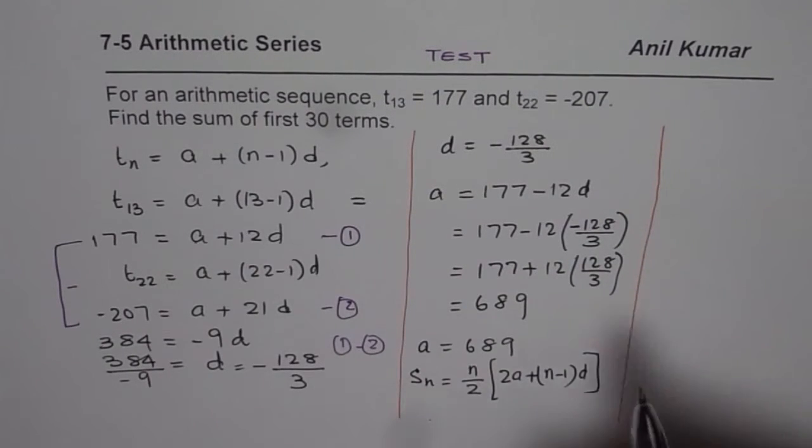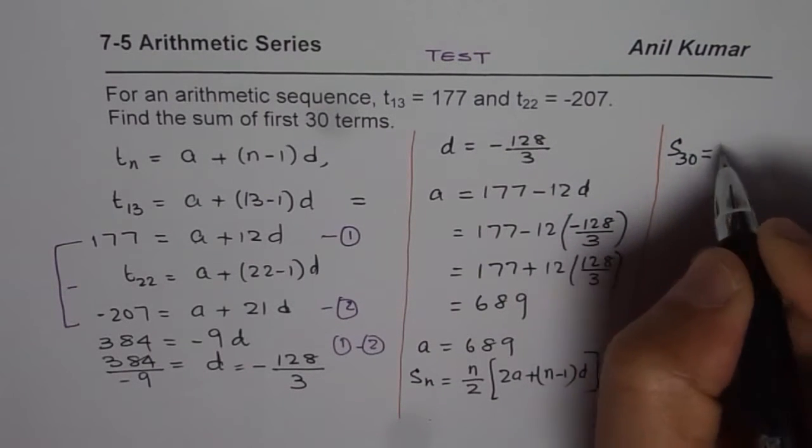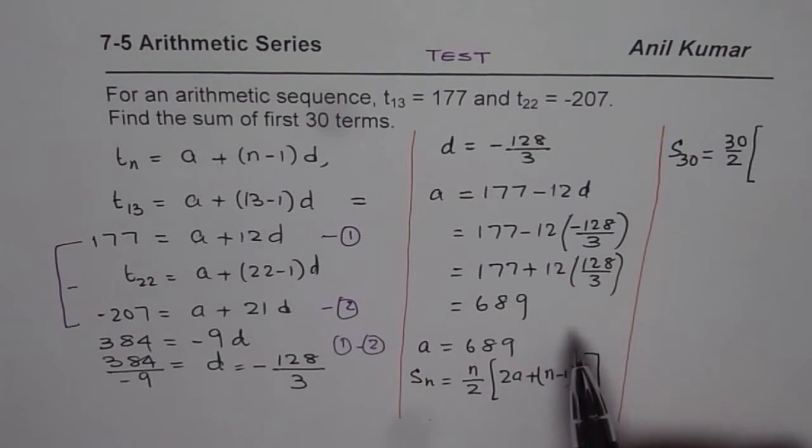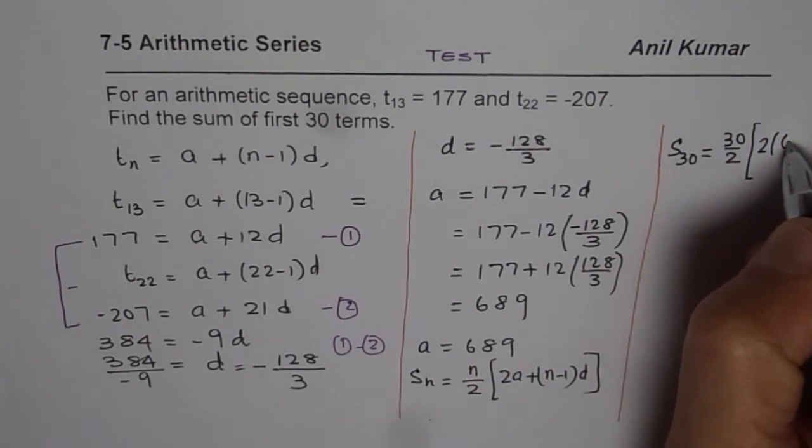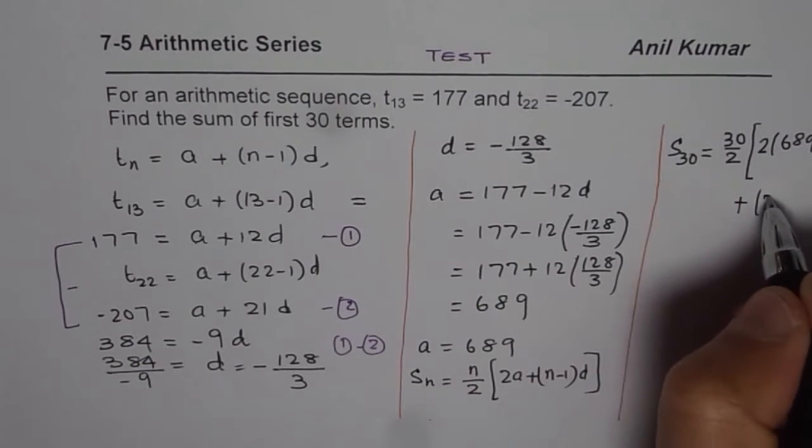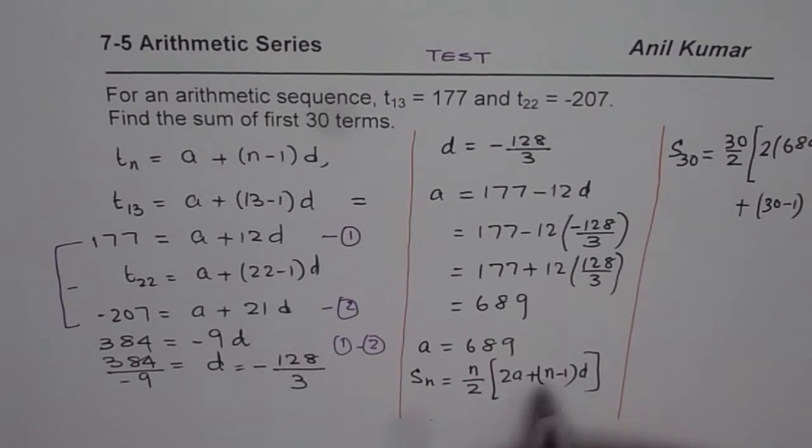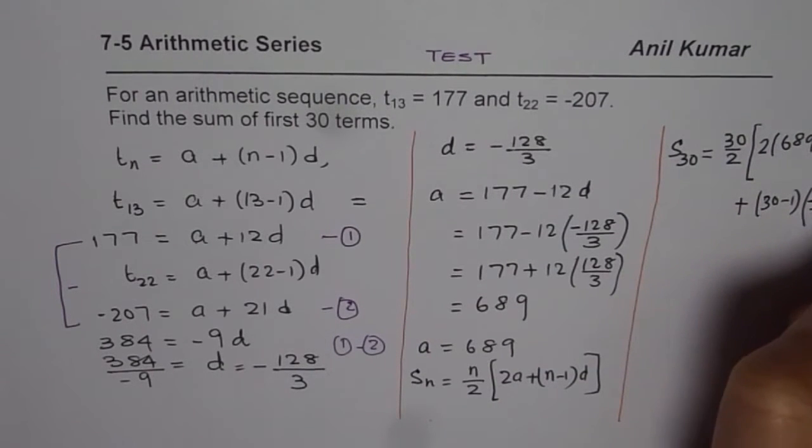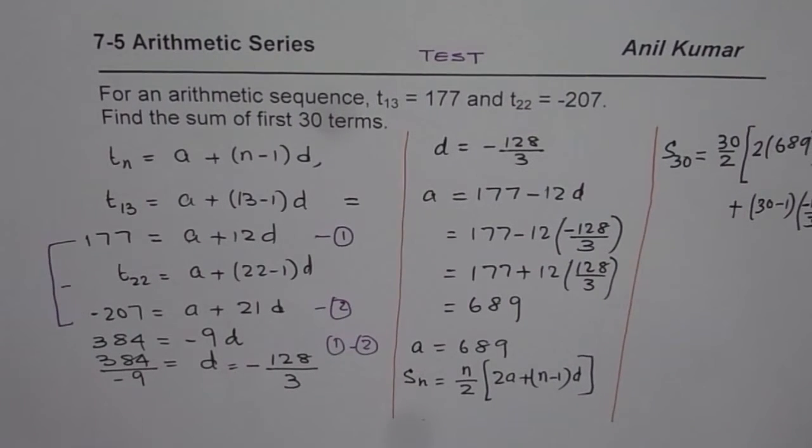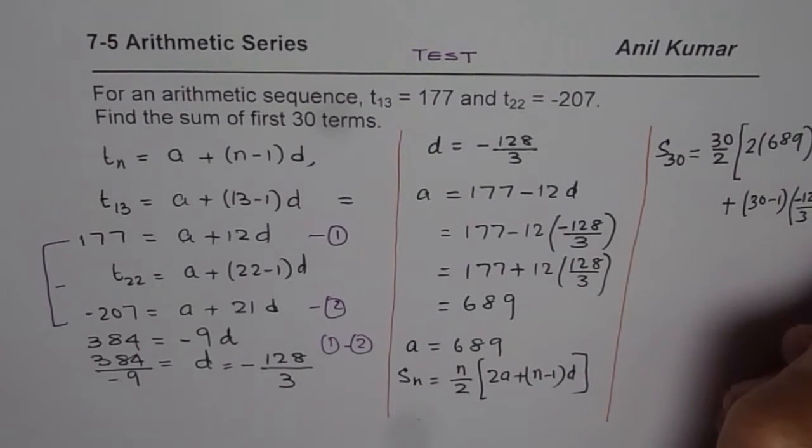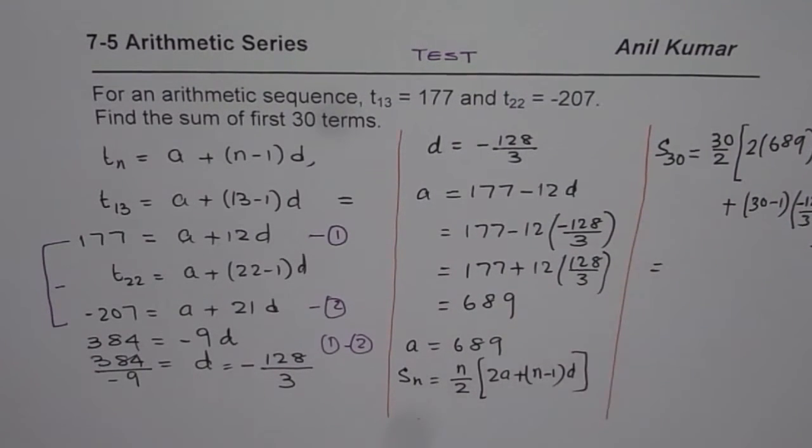This is the formula we'll use to find the sum of 30 terms. S₃₀ = (30/2)[2(689) + (30-1)(-128/3)]. So that's (30/2)[2×689 + 29×(-128/3)]. Let's evaluate this answer.